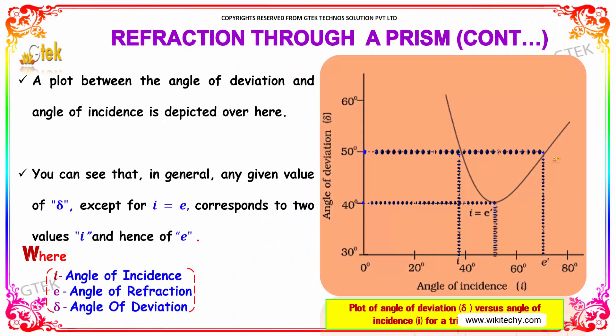A plot between the angle of deviation versus angle of incidence. You can see that in general, any given value of delta except for i equals e corresponds to two values of i and hence of e.